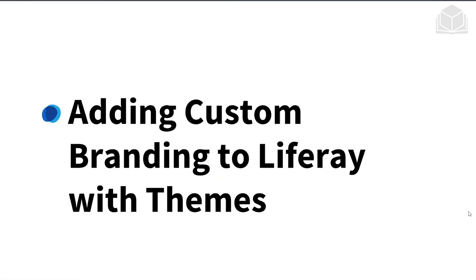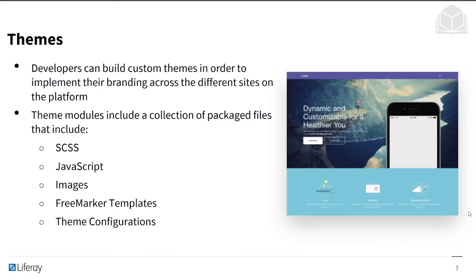Now let's talk about adding custom branding to Liferay with themes. We can think of themes as a set of stylings or templates that unify how pages of a particular site look — for example, using a particular template, a specific font, font size, or font color. Developers can build custom themes to implement branding across different sites on the platform. Theme modules include a collection of package files: SCSS, JavaScript, images, FreeMarker templates, and theme configurations.